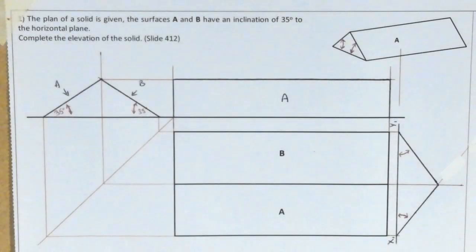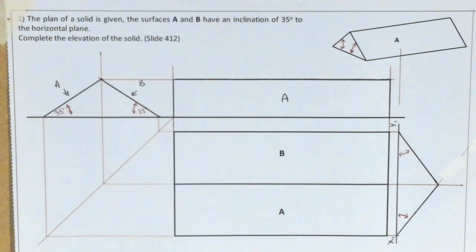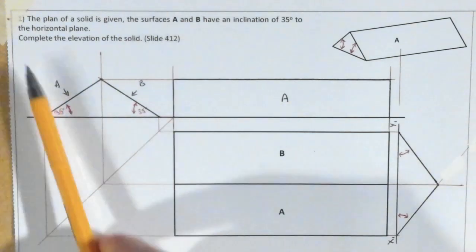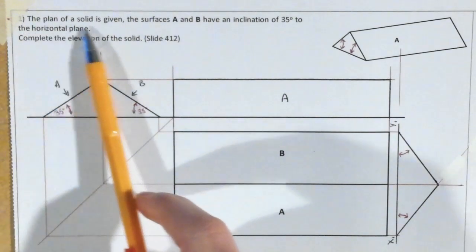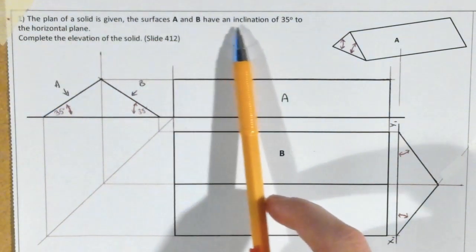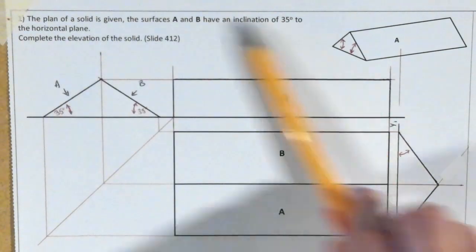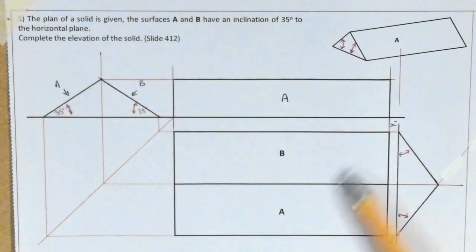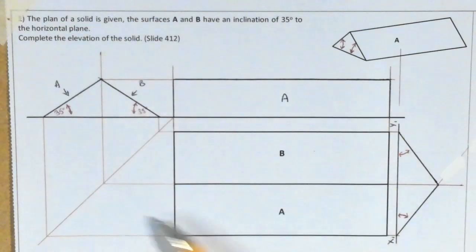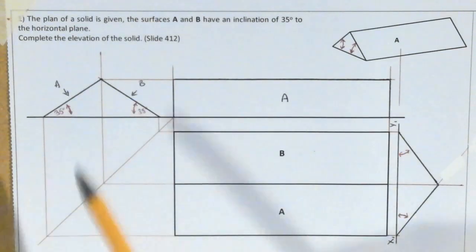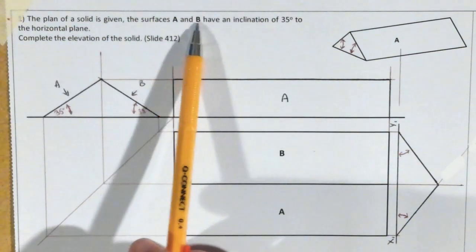The topic here is surface geometry and specifically roof geometry. We're going to go over some basic constructions in relation to roof geometry. The question states that the plan of a solid is given, and surfaces A and B have an inclination of 35 degrees to the horizontal plane. This question has been previously completed, but we're going to talk through it to get a better understanding of the topic.